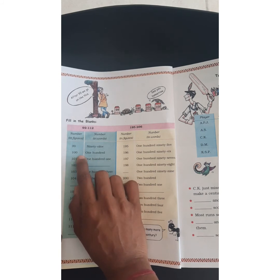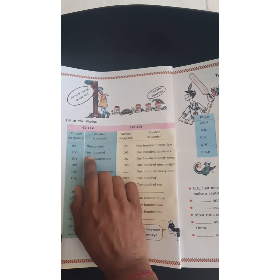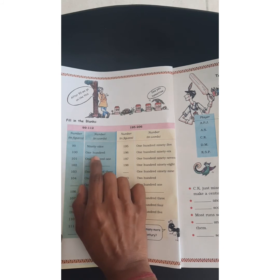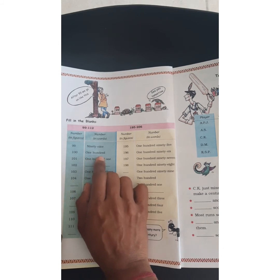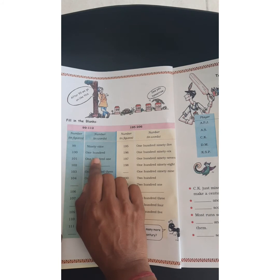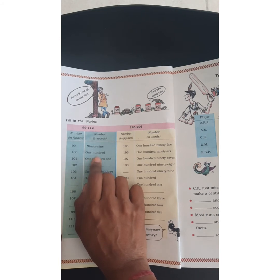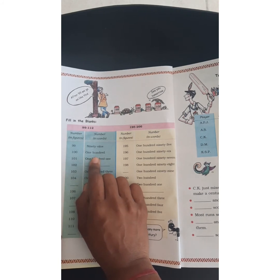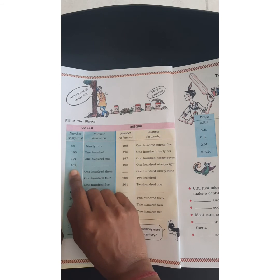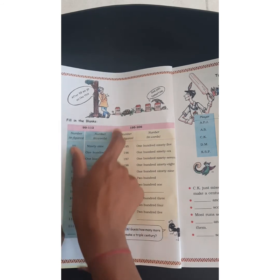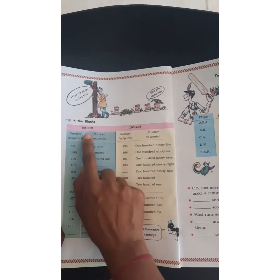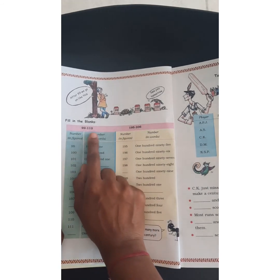100 — century. How do you write 100? O-N-E H-U-N-D-R-E-D. This will be the number name for 100. Now in this section you are going to study the numbers from 99 to 112.